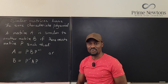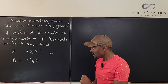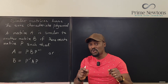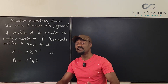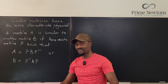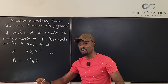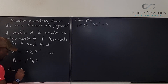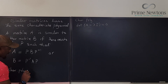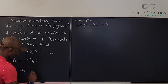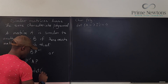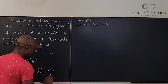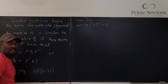Now, what is the characteristic polynomial? It is the polynomial you use to find the eigenvalues — the one you equate to zero after taking the determinant. The characteristic polynomial is the determinant of A minus lambda I.